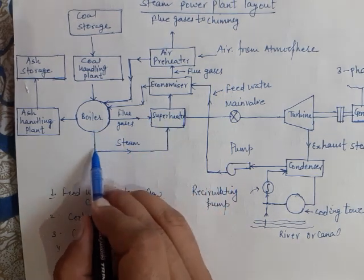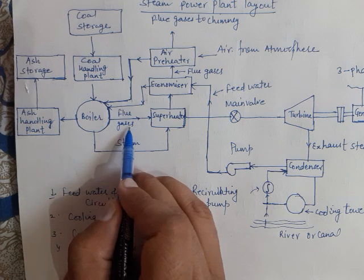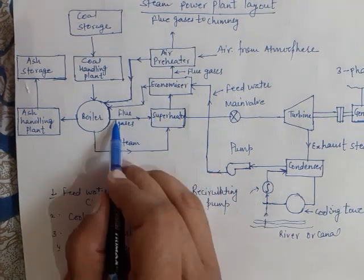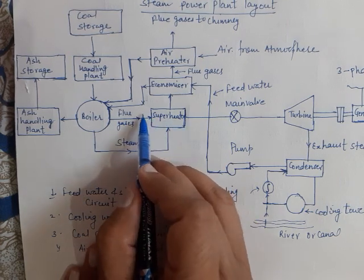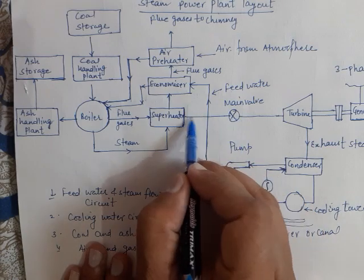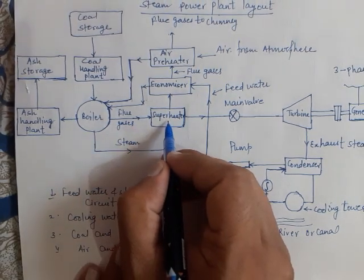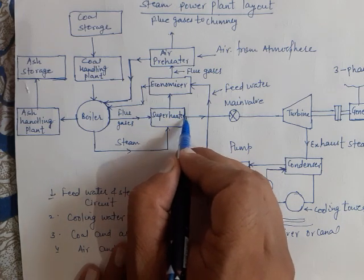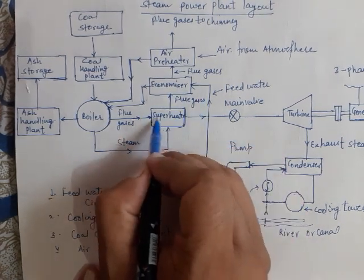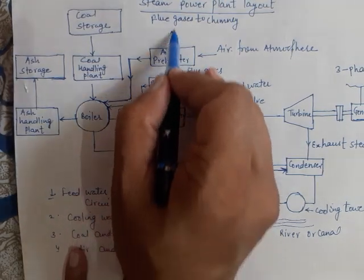The flue gases generated in the boiler are sent into the superheater, where the steam coming out of the boiler is superheated. The hot flue gases, as a result of combustion of fuel, flow through the superheater, then through the economizer, and then through the air preheater, before being discharged to the atmosphere via a chimney. This is the flue gas circuit.